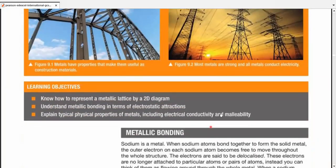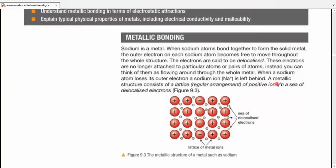Metallic bonding. In this chapter, we're going to discuss metallic bonding. Let's take an example to start with. Sodium is a metal. When sodium atoms bond together to form the solid metal, the outer electron in each sodium atom becomes free to move throughout the whole structure.